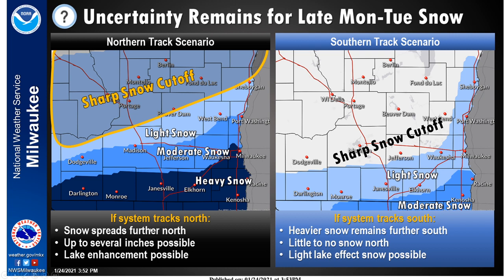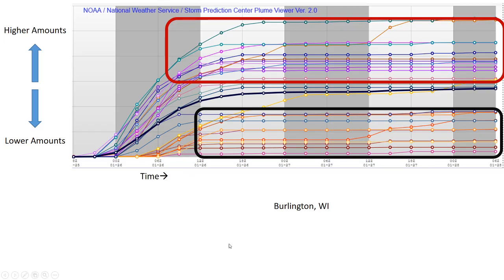Just seeing some light to moderate snowfall amounts, and unfortunately still not a lot of clarity at this point as to how things are going to play out. I want to illustrate this scenario with what we call a plume display. This is for Burlington down in southeastern Wisconsin, and you read this as time increases from left to right.